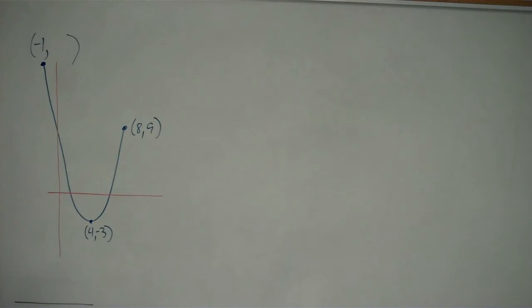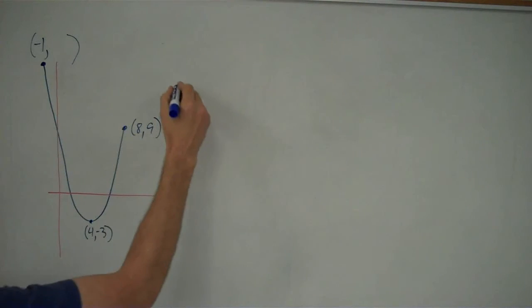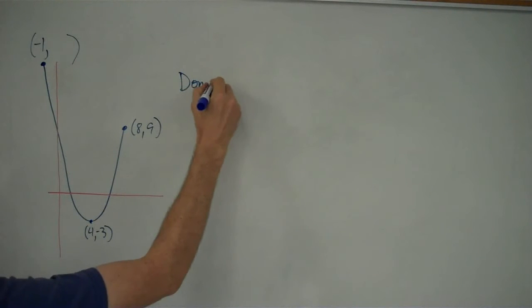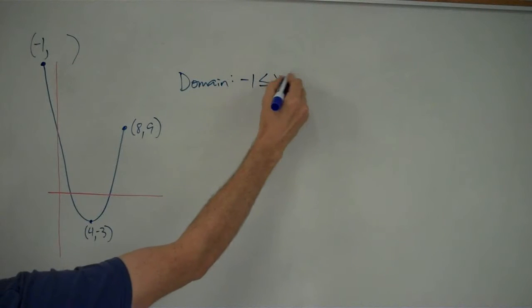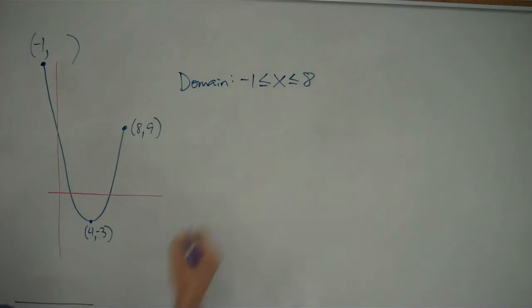In this problem, I have a parabola with a restricted domain. As we can see, the domain goes from negative 1 to 8. So the domain is negative 1 is less than or equal to x, which is less than or equal to 8.